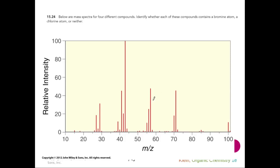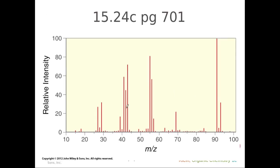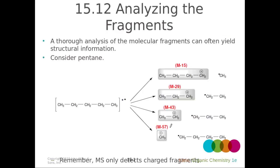Looking at some spectra below: the first doesn't look like a 1:1 ratio nor a 3:1 ratio, so we have neither a bromine nor a chlorine in that spectrum. In the second, we have a characteristic 3:1 ratio for the molecular ion peak to the M+2 peak, so we definitely have a chlorine in that spectrum.